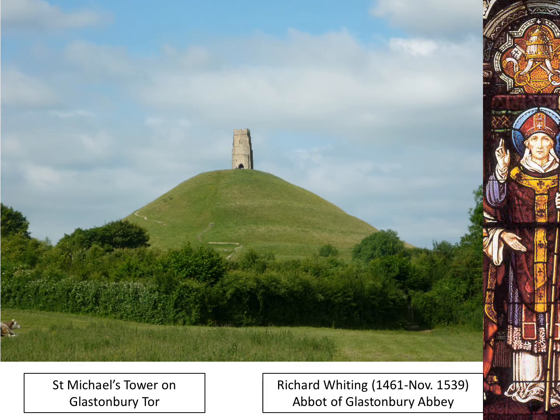In November 1539, Richard Whiting, who at the time was an elderly man, was dragged by the king's men from the abbey up to St Michael's Tower on a hurdle, which is like a wooden frame. Once he was there he was hanged, drawn and quartered, which is the death of a traitor. The four quarters of his body were sent to Wales, Bridgwater, Bath and Ilchester, and his head was put on a spike at the gates of Glastonbury Abbey as a warning to others.